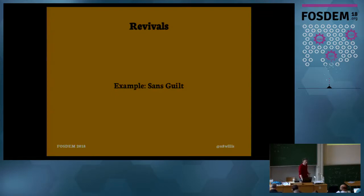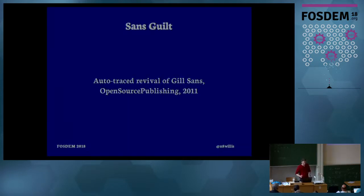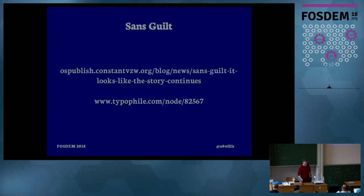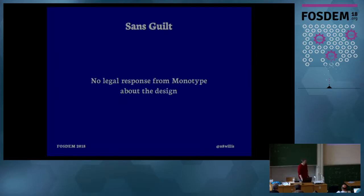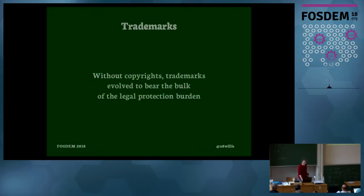An interesting corner case happened here in Belgium. In 2011, Open Source Publishing — an artist collective — auto-traced Gill Sans in software and released it as a font. They wrote a letter to Monotype, which owns Gill Sans corporately, to state their reasoning, and mentioned it on Typo-L. The community reaction was essentially okay, though they didn't think the auto-tracing results were great. Monotype's legal team didn't respond at the time, though I later heard they did contact OSP about a different project over a name collision for trademark reasons. Without copyright on the design, trademarks evolved to bear the bulk of legal protection.